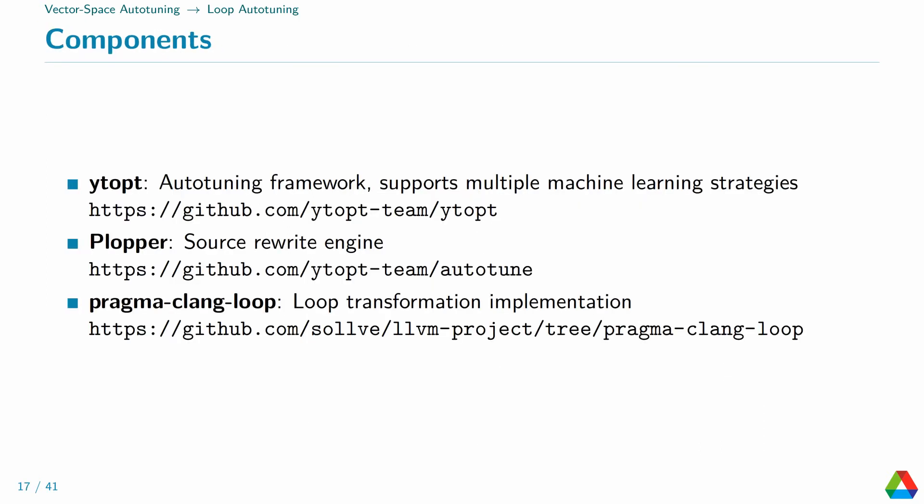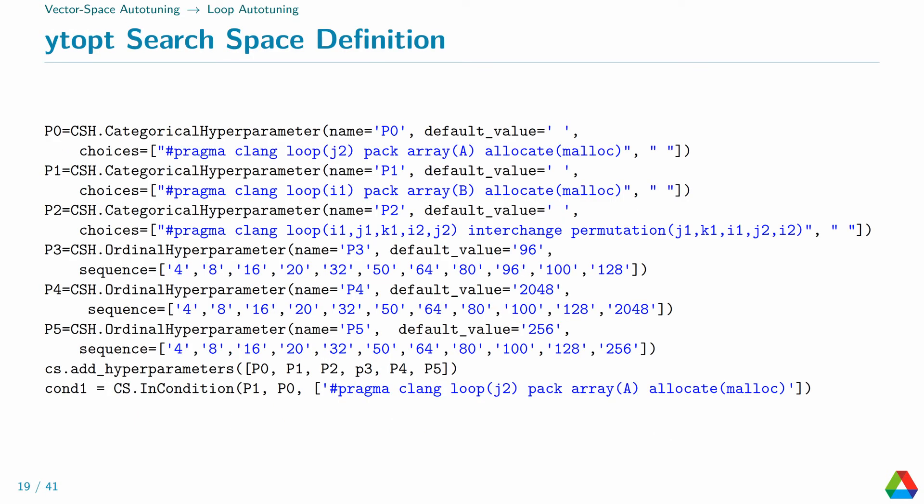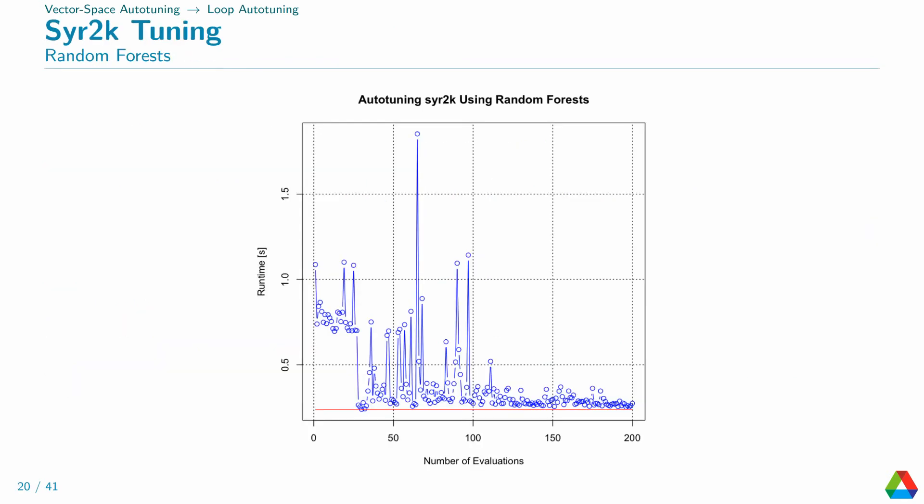So, to set up autotuning of loop directives, we use these components. First, we use ytopt that implements the optimization algorithms. We use plopper to insert the directive into the source code. And of course, we use my loop pragma extensions for clang, which support transformation composition. The file to be modified by plopper looks like this. Plopper is going to replace the hashtags by some value, so either the tile size or entire pragma lines. This is how the search space is defined with ytopt. We have a selection of possible tile sizes and some loop pair mutations. Array packing for A and B can be enabled or not. And here is how the autotuning progresses using ytopt's random forest strategy. Indeed, it converges towards some minimum at the end.